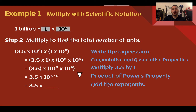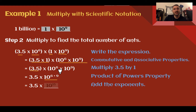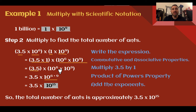Multiplying with scientific notation is pretty simple — it just involves using the commutative and associative properties. Group the factors together: 3.5 and 1, multiply those to get 3.5. Then group the power parts together: 10 to the 6th and 10 to the 9th. Using the product of powers property, 10 to the 6th times 10 to the 9th is 10 to the 6 plus 9, which becomes 10 to the 15. So the number of ants would be approximately 3.5 times 10 to the 15th power.